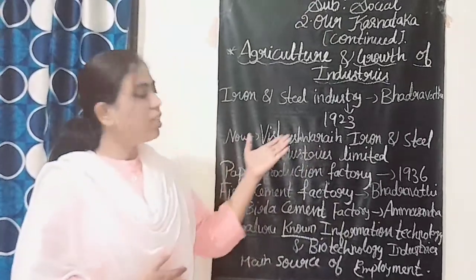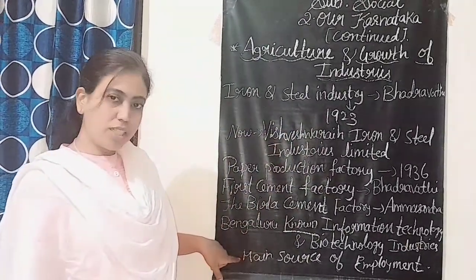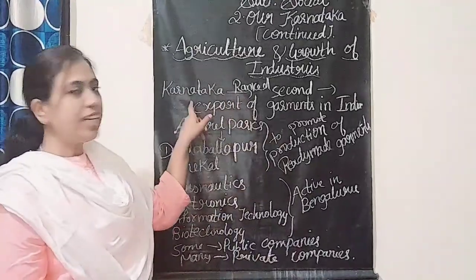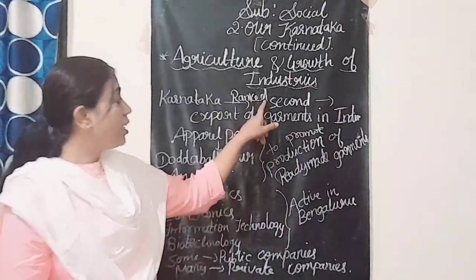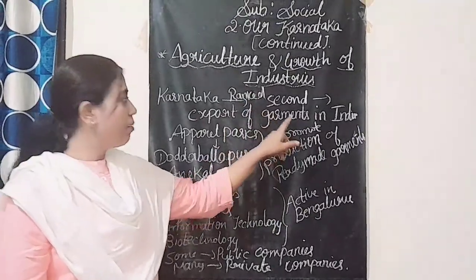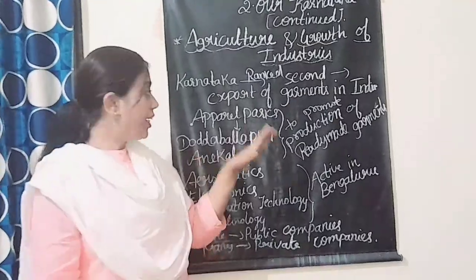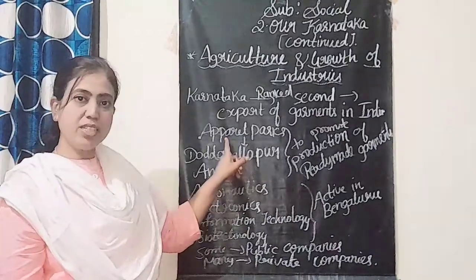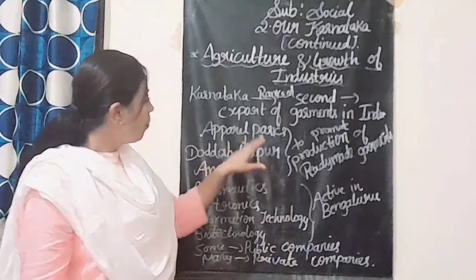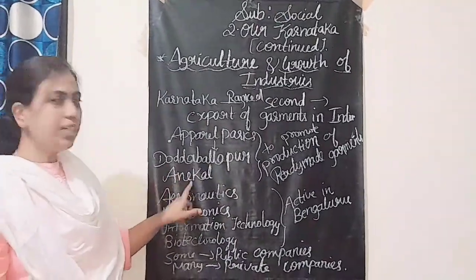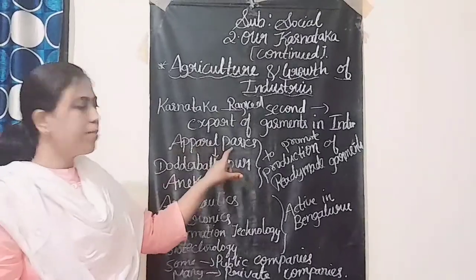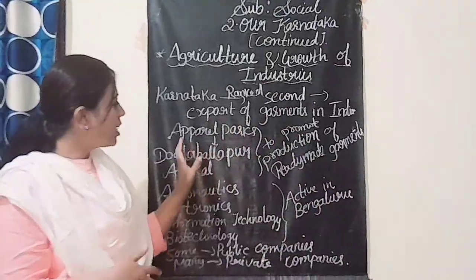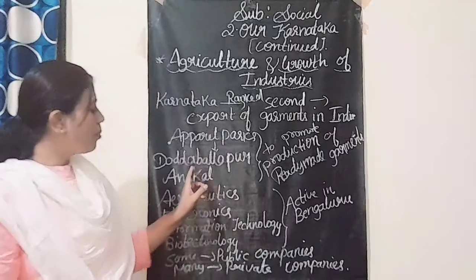Karnataka state is ranked second in the export of garments in India. Apparel parks have been established at Doddaballapura and Anekal to promote the production of ready-made garments.